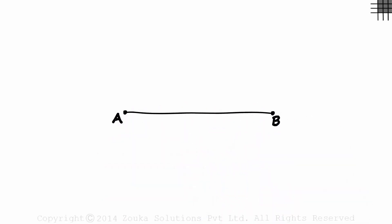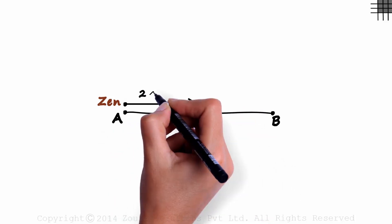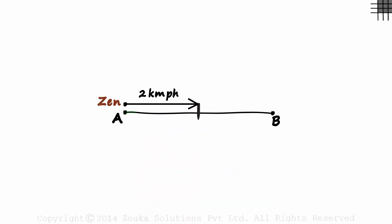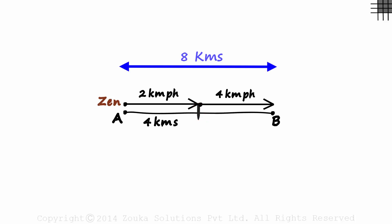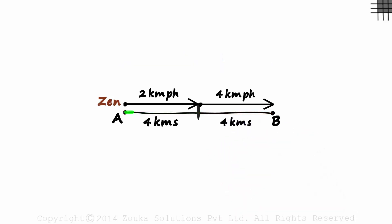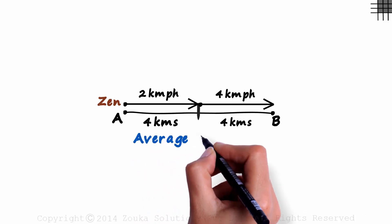The distance between points A and B is 8 kilometers. Zen begins at point A and covers half this distance — 4 kilometers — at 2 kilometers per hour. From this point to B, he travels at 4 kilometers per hour, which is also 4 kilometers. So he runs half the distance at 2 kilometers per hour and the remaining half at 4 kilometers per hour. What will be his average speed?